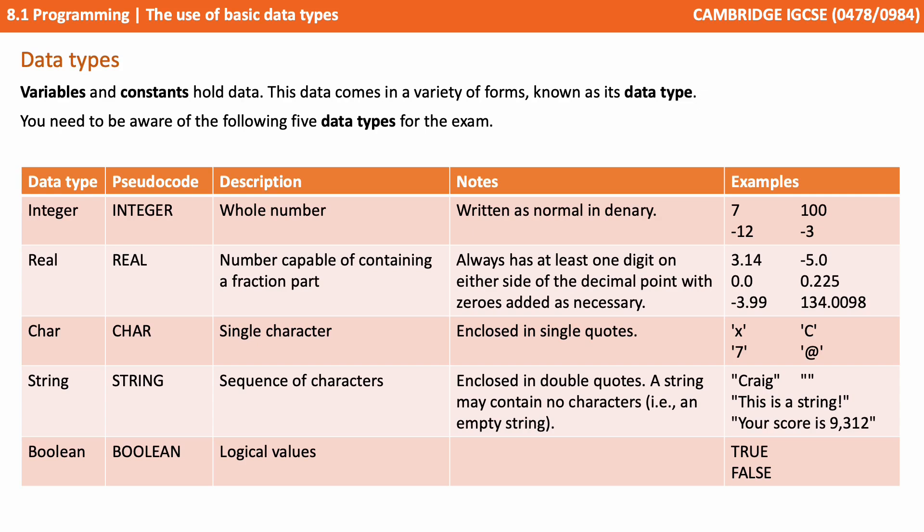You need to be aware of the following five data types for your exam. We've got integers, which can store whole numbers, both positive and negative. We have reals, which are sometimes referred to in other languages as floats. These are capable of containing positive and negative numbers that have a fractional component, like minus 1.25.